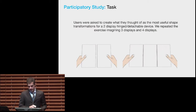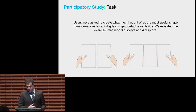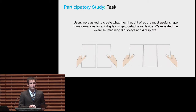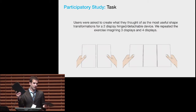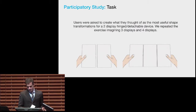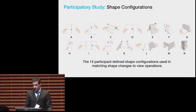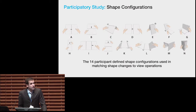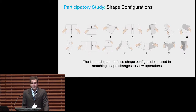To investigate the most functional shapes of a foldable device, we conducted a participatory design session in which participants were presented with four 3D-printed tiles without displays. Each tile contained magnets that allowed participants to interconnect as well as hold shapes. Users were asked to create what they thought of as the most useful shape transformations for a two-display reconfigurable device, and we then repeated the exercise with three and four displays. Users did not like four-display configurations, as folding a four-segment device alters the shape geometry in two concurrent dimensions, making it more difficult to handle.